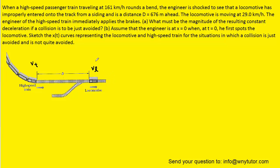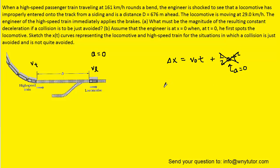Now, it's worth noting that for the locomotive, the acceleration is zero. The locomotive doesn't really realize that the train is coming, so it never hits the brakes and therefore continues at the same constant velocity VL. Because the acceleration is equal to zero meters per second squared, that term drops out of the displacement equation. So the displacement of the locomotive equals its initial velocity VL multiplied by time T.